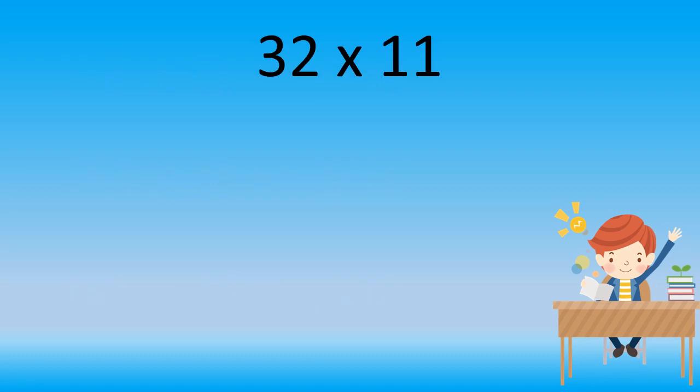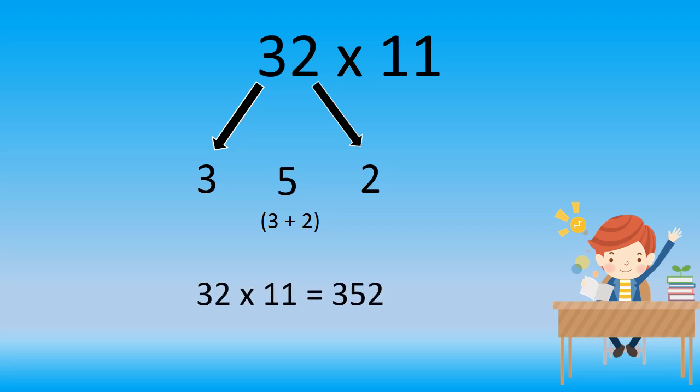This is your first sum. 32 multiplied by 11. The very first step is write down these 2 digits separately. After this, you just have to add the 2 numbers and write the answer in between. That's it students. This is the answer for 32 multiplied by 11, that is 352.